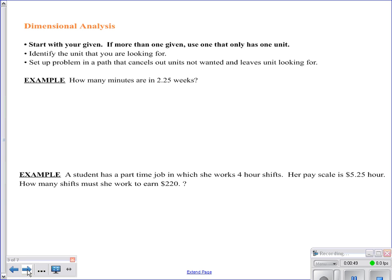So if we look at some of our rules here, it says the first thing we're going to do is start with the given. So you read through your problem and you start with the given. If you happen to have more than one choice, then you are always going to use the one that has only one unit. The other thing is that we're going to need to identify the unit that we're looking for. I do that first. So for example, in this problem right here, this first example, it says how many minutes are in 2.25 weeks.